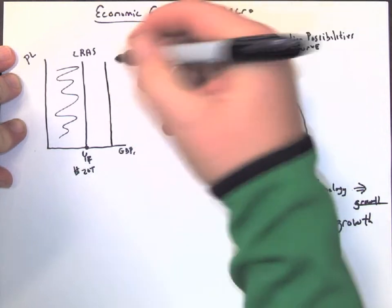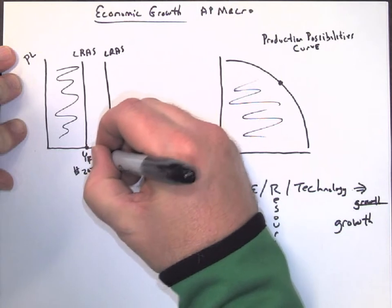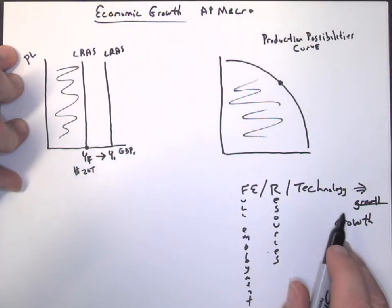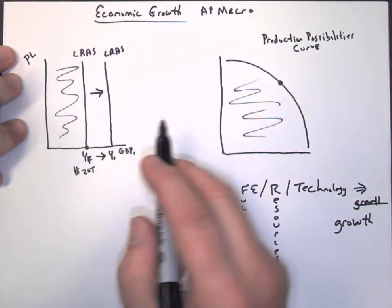So that economic growth, if we were to add some new resources, people, or improve our productivity via training, healthcare, things like that, then we would actually shift long-run aggregate supply to the right.